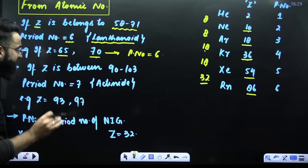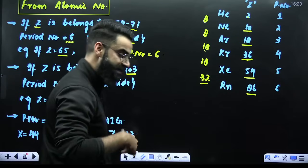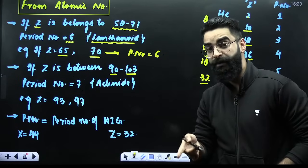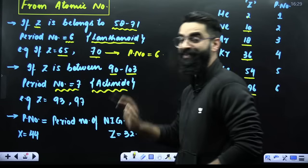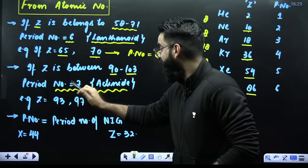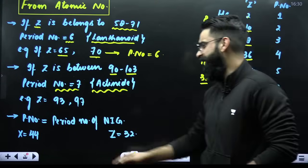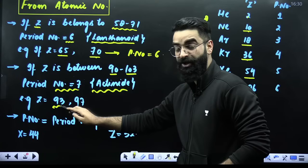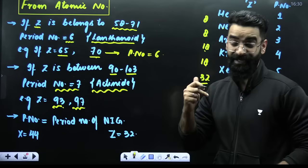If the atomic number is from 90 to 103, it is again an F block element — the actinoids — and actinoids belong to period number 7. So 58 to 71 = period 6; 90 to 103 = period 7. For example, atomic number 93 has period number 7, and atomic number 97 also belongs to period number 7.